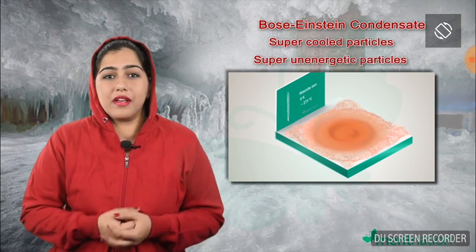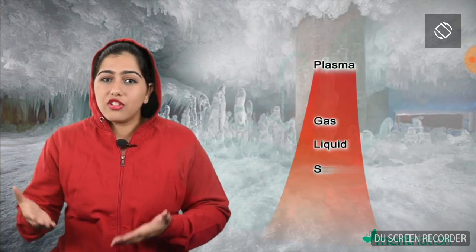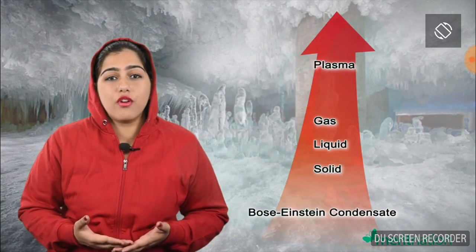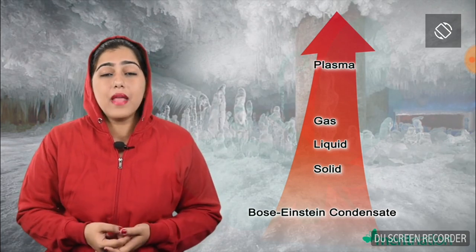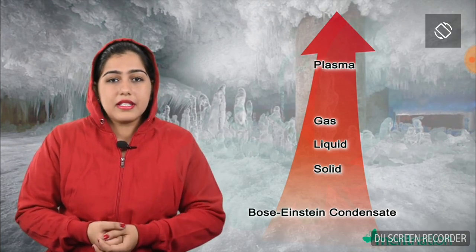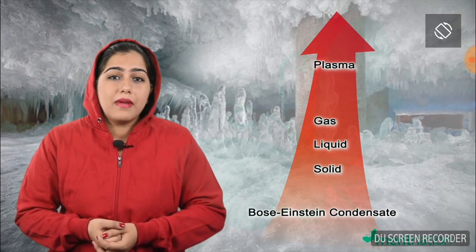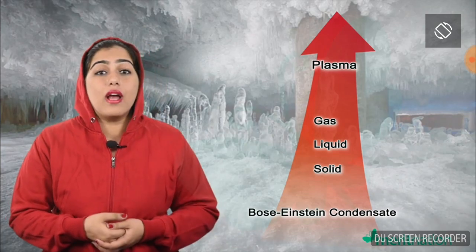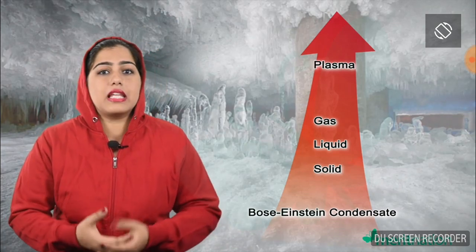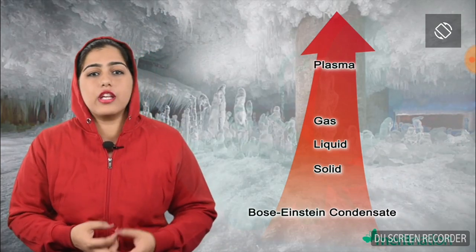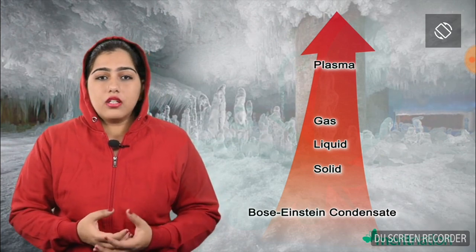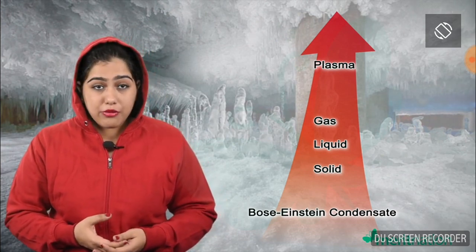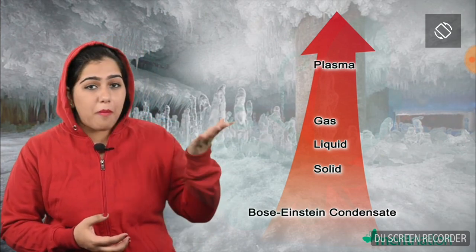This state of matter is characterized by supercooled and super unenergetic particles. If we arrange all states of matter in increasing order of energy, the Bose-Einstein condensate will be at the bottom of the scale, while the plasma state — containing super energetic and super ionized particles — will be at the top.